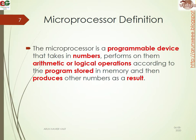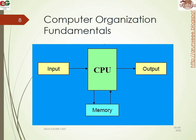Microprocessor definition: a microprocessor is a programmable device that takes in numbers, performs mathematical or logical operations according to the program stored in the memory, and then produces a result. This is the basic fundamentals of computer organization — you can see input devices, output devices, and a CPU which performs ALU functions, with memory for storage purpose.